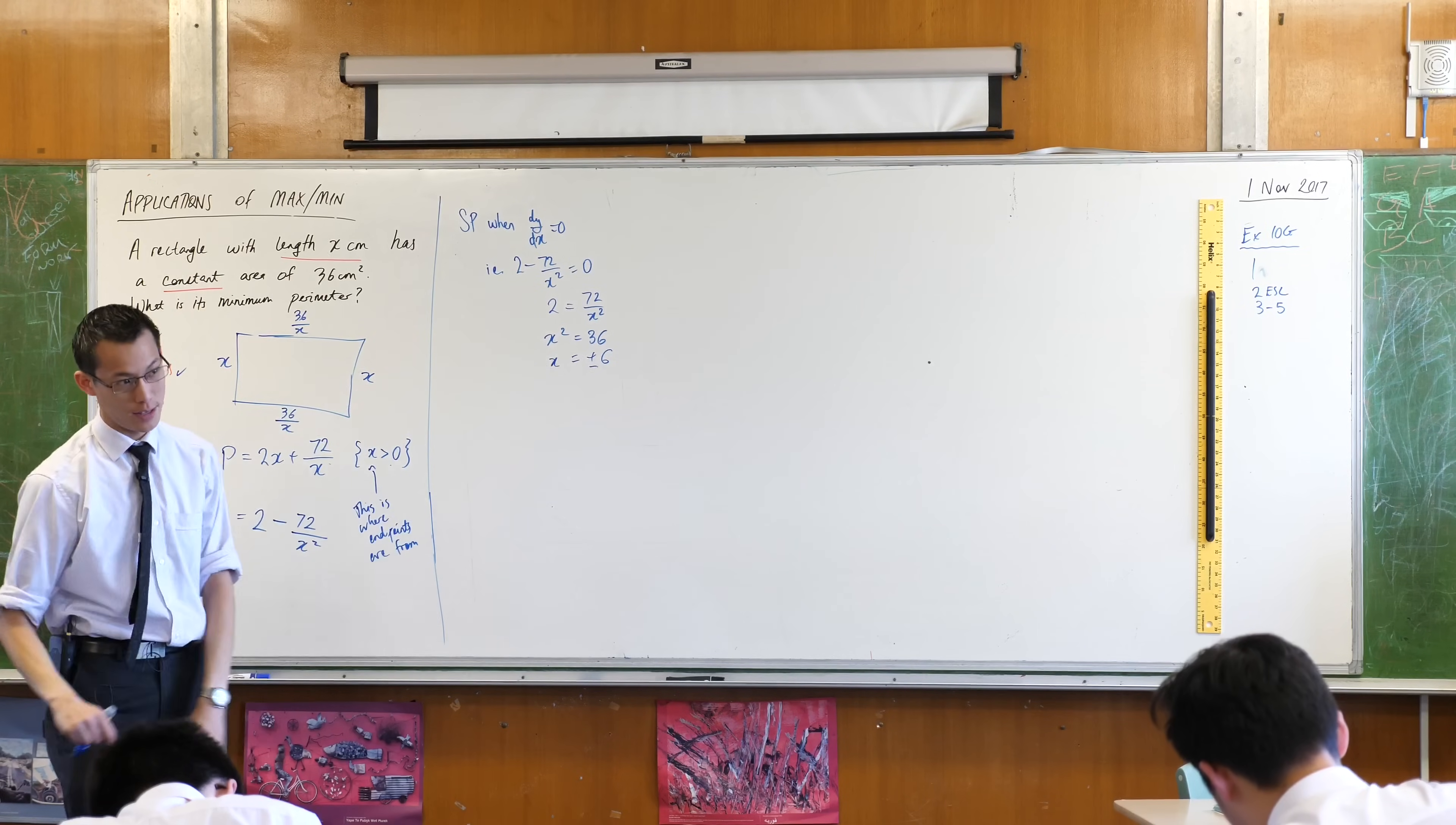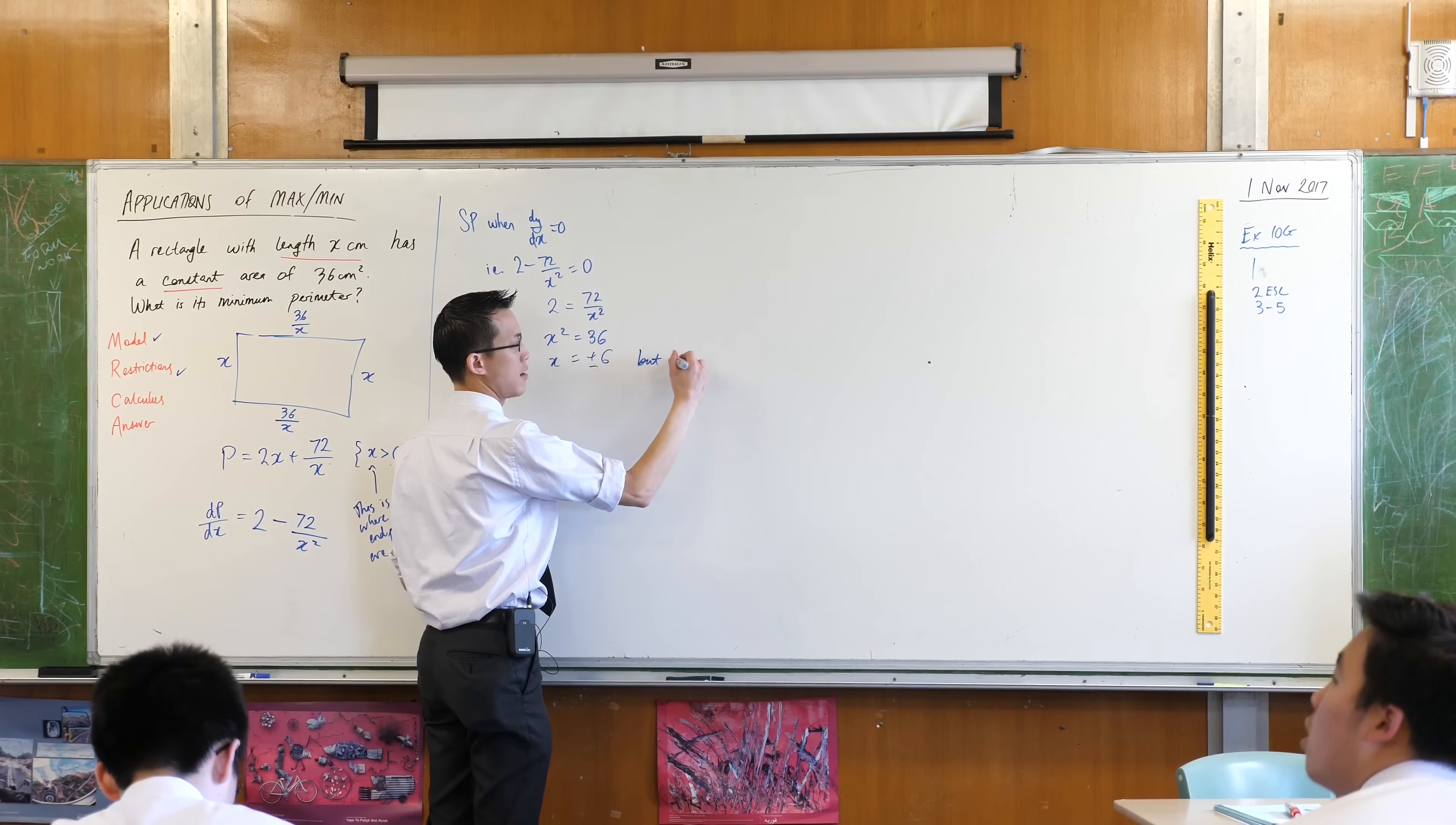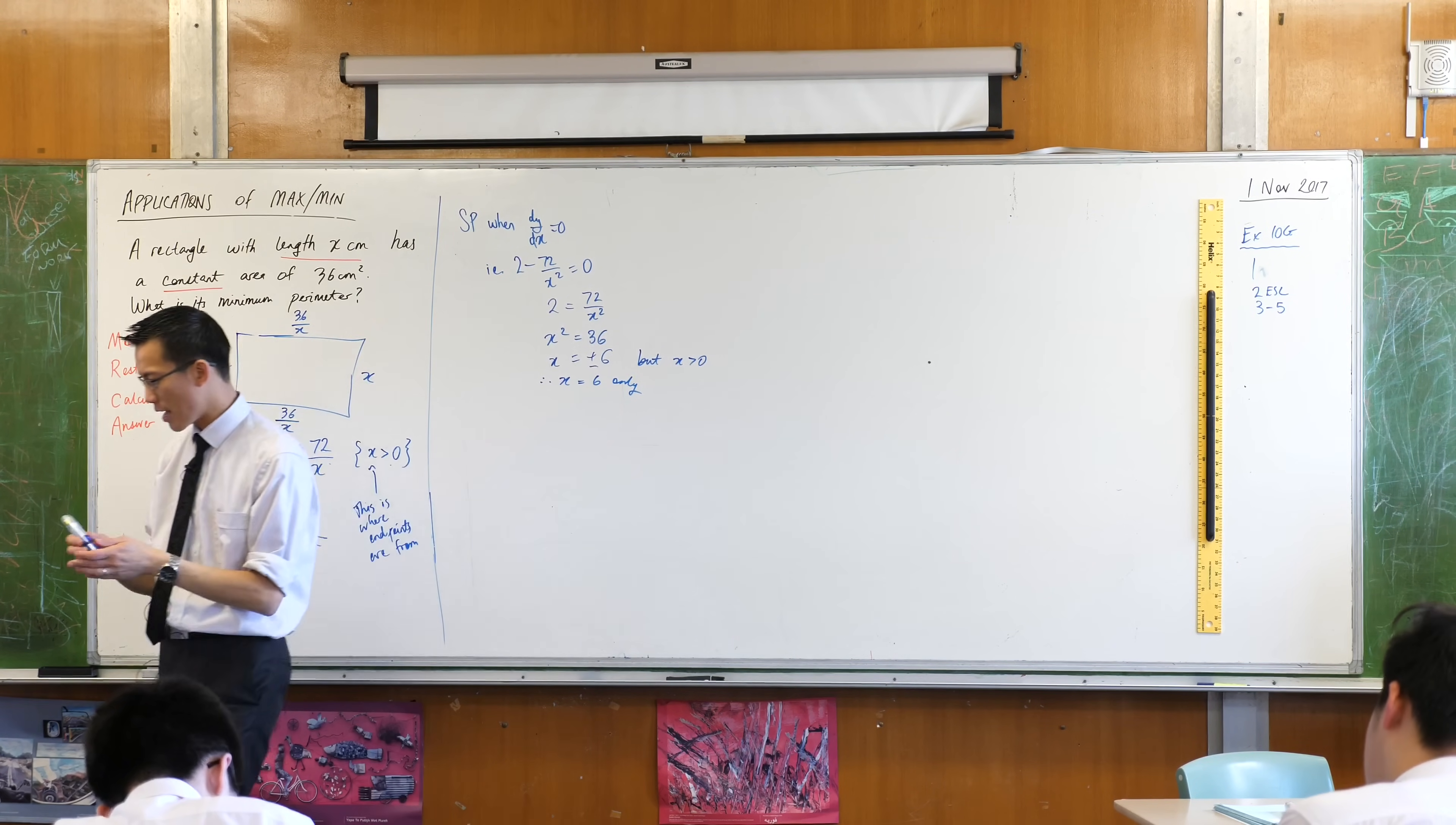But remember our second step in this whole process was, note the restrictions, so one of these solutions is invalid. So I'm literally going to say, but x is greater than zero, right? Therefore x equals 6 only.